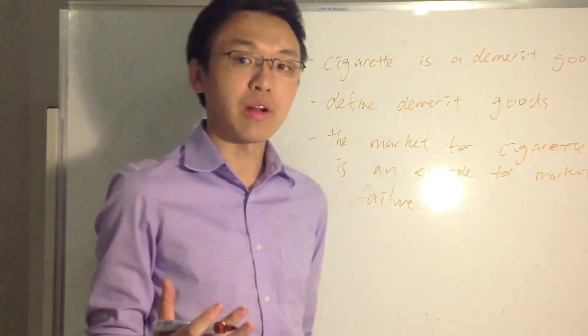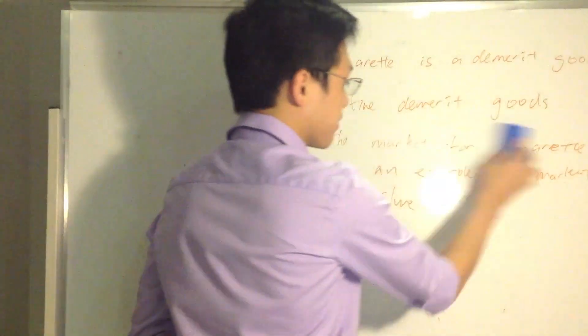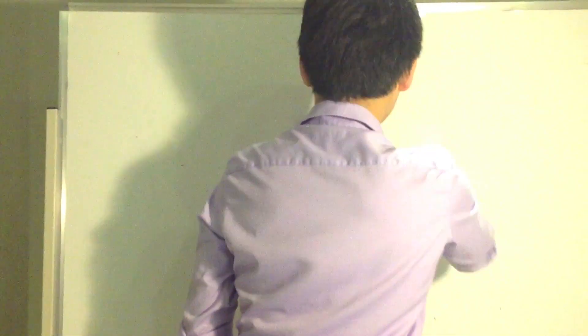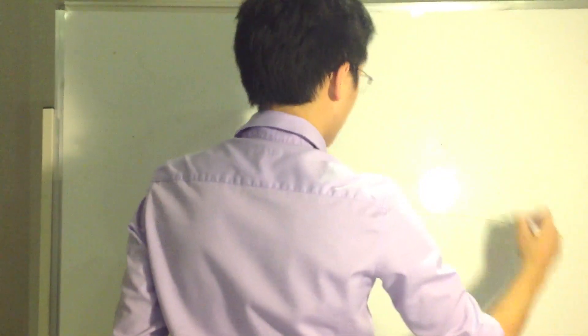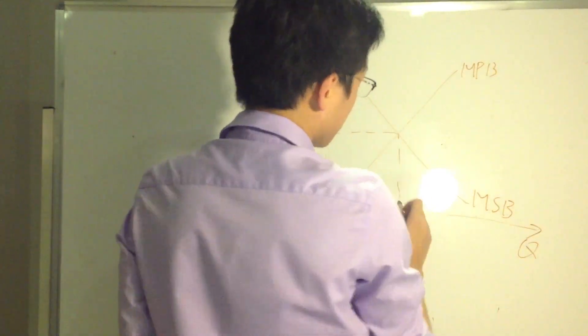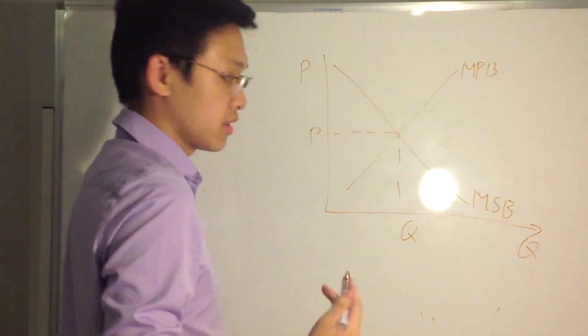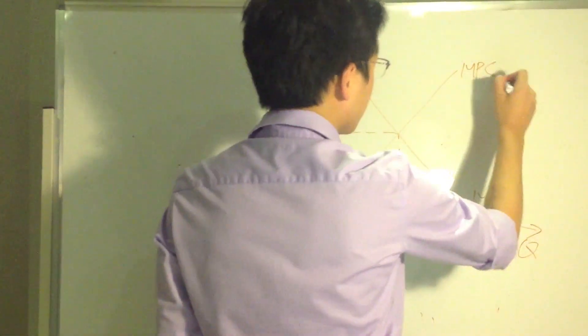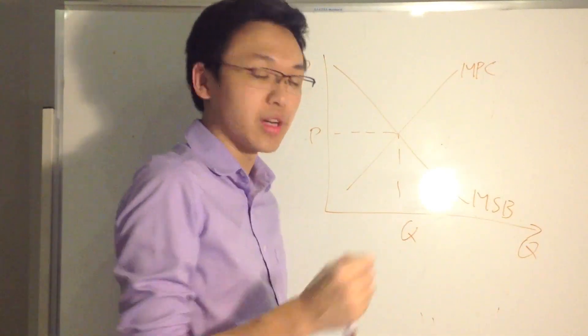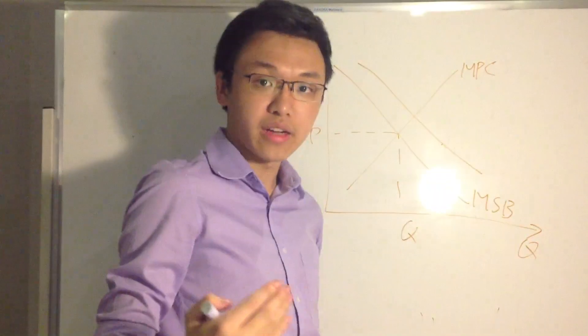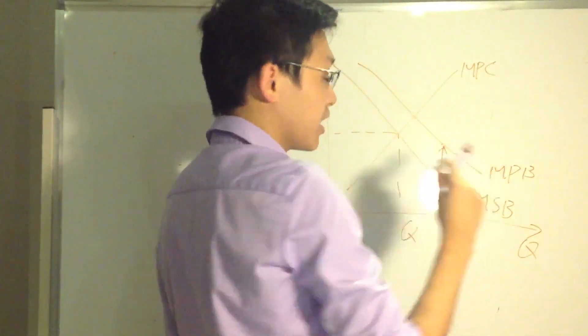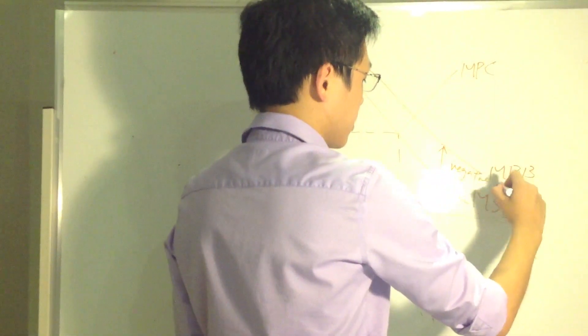Obviously you should draw a diagram. It's a negative externality of consumption diagram. So quantity here, price here. So there's the MSB. Let's draw the MSB and the MPB first. So this is social optimal, social optimal occurs when marginal social benefit equals marginal social cost, right here. Since there's negative externalities of consumption, where should the marginal private benefit curve go? Is the private benefit greater or is the social benefit greater? Obviously the private benefit is greater because there's a harm to society. So the marginal private benefit is greater than the marginal social benefit. The difference between the marginal social benefit and the marginal private benefit is the negative externality that occurs.